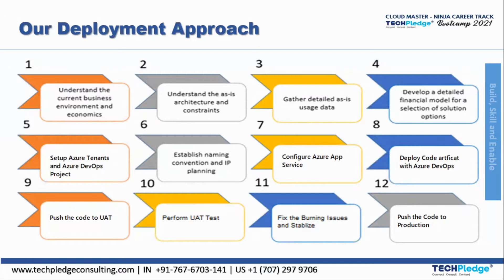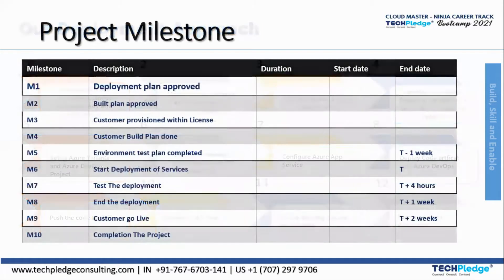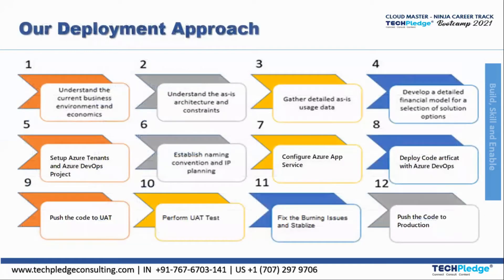When you talk about any project that you are going to execute, there are different phases. First of all, we need to know what is the current business environment, what are the economics related to it, how is the architecture and constraints. Then we need to understand the requirements, gather the detailed assets usage data, and then develop a detailed financial model for selection of solution options.